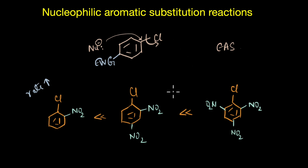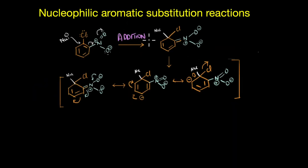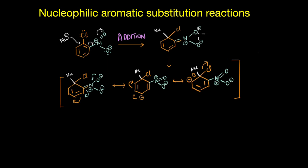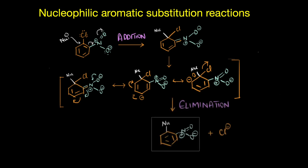So let's now look at the mechanism of this reaction. The first step is the addition of the nucleophile. Here we have an ortho isomer, and as the nucleophile adds to the haloarene, the electron density gets delocalized. The pi electrons get delocalized onto the electron withdrawing nitro group, drawing electron density from the ring onto the more electronegative oxygen atom. This negative charge gets further delocalized within the ring and eventually results in the elimination of the halogen atom.